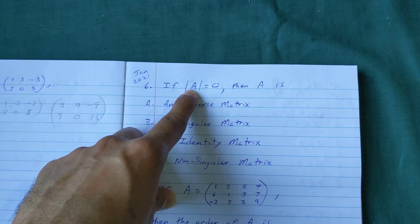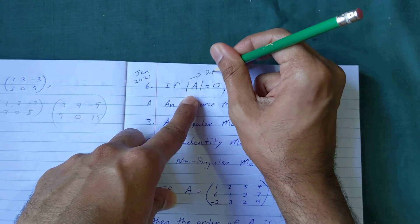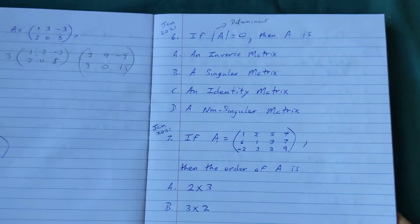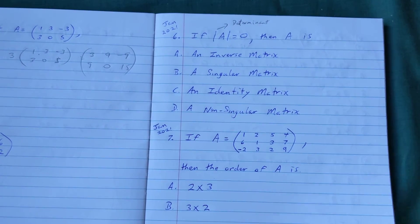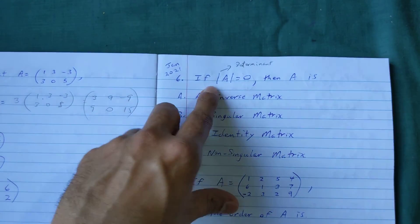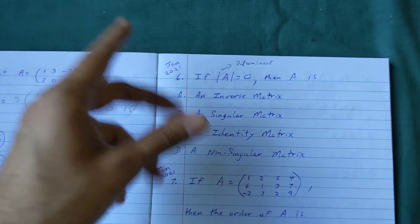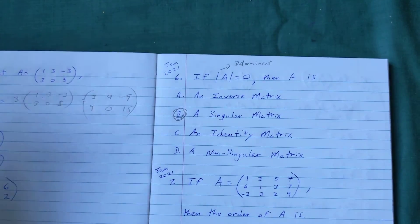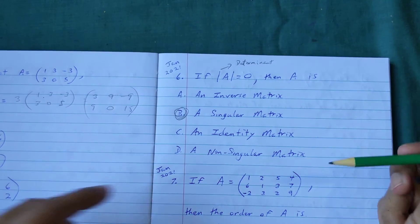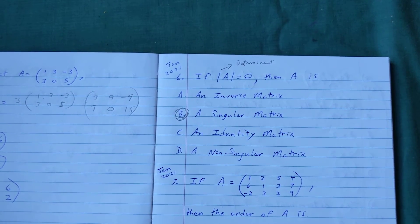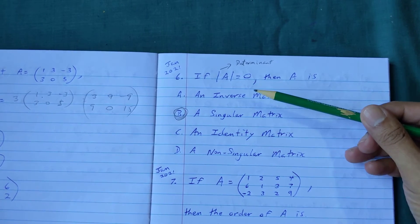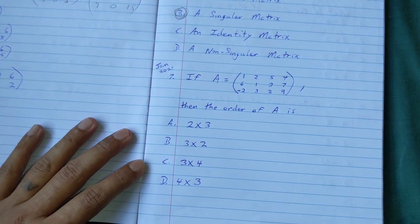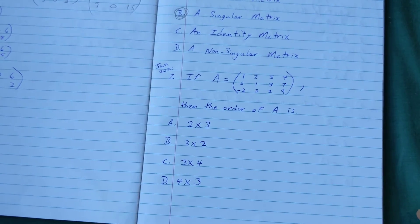Next: if the determinant of A is zero, then A is a singular matrix. When you see those two lines on either side with respect to matrices, that means determinant. If the determinant equals zero, it's called a singular matrix. If it's not zero, it's non-singular. A singular matrix does not have an inverse because you can't divide by zero. All of this is also in the notes from the previous videos.